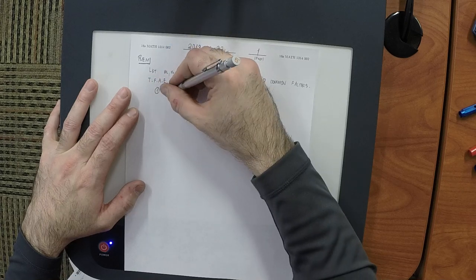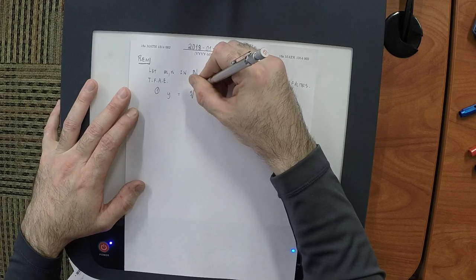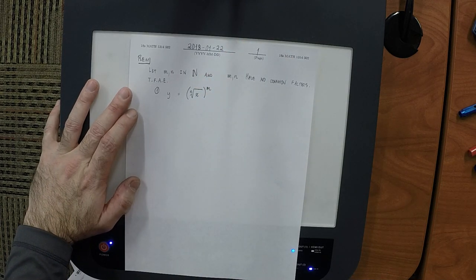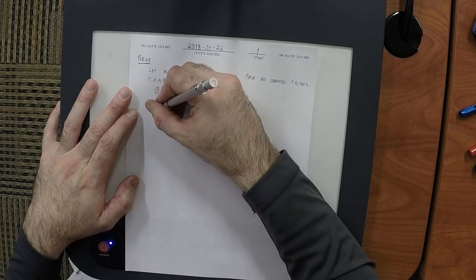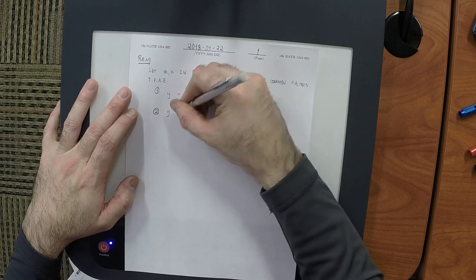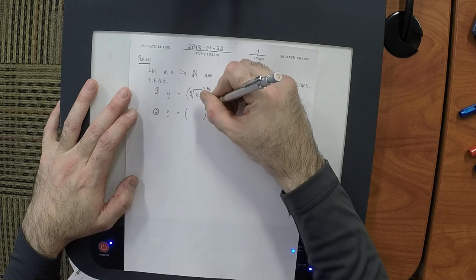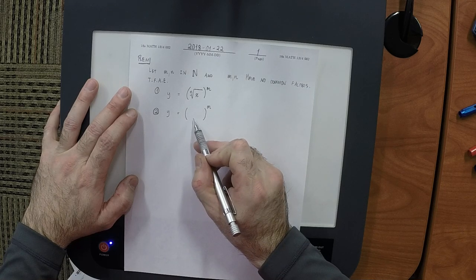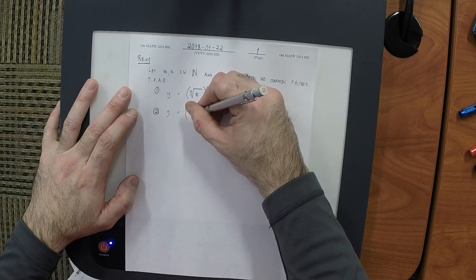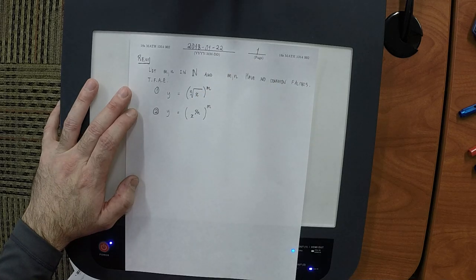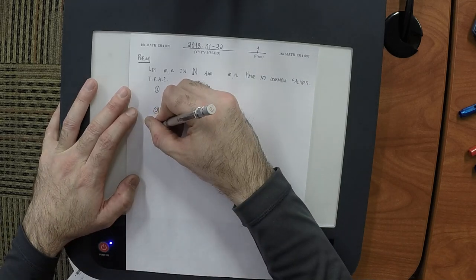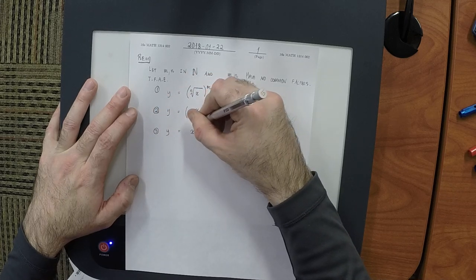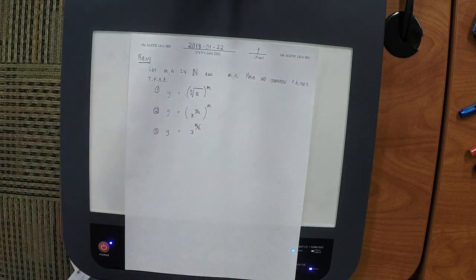First, that y equals the nth root of x, all raised to exponent m. That one is equivalent to y equals x to the 1 over n, all raised to exponent m — this is just by definition, they're the same. And then third, here's the new one: y equals x to exponent m divided by n, combining those two exponents in that way.